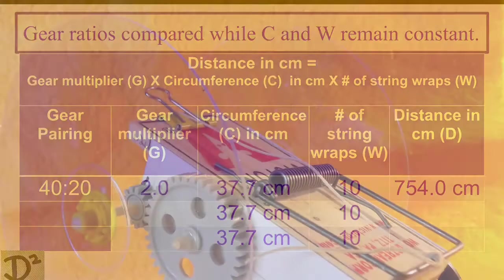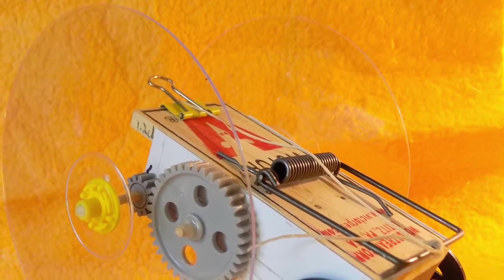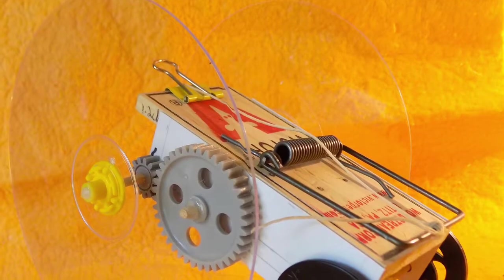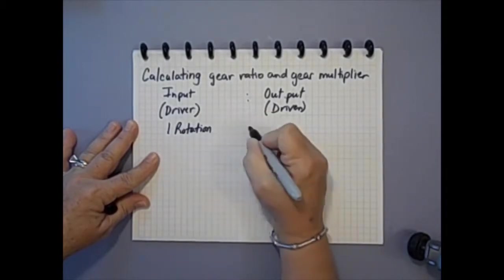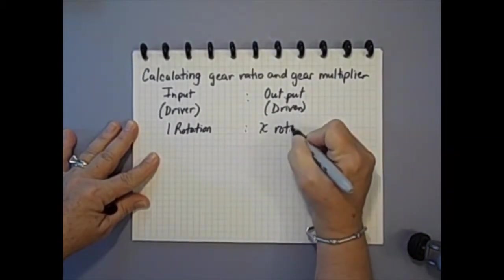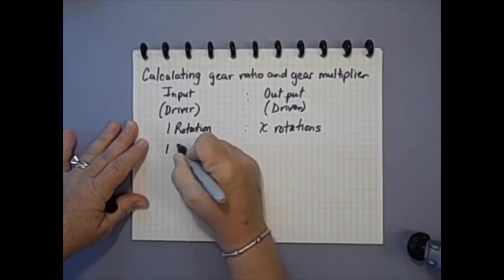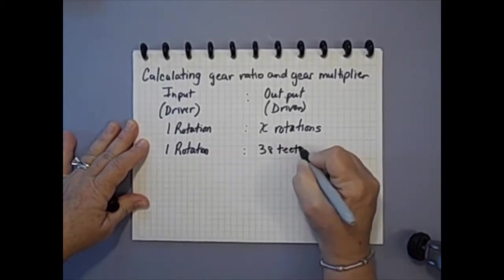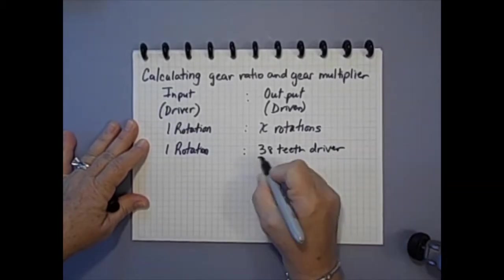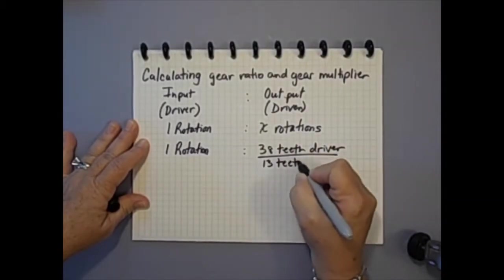So, how far will a car with CD wheels, 10 string wraps, and a gear pairing of 38 to 13 travel? Let's calculate the ratio and gear multiplier this gear pairing produces. The input gear, 38 teeth, will produce one rotation for each string wrap. Solve for X where the number of teeth on the driver gear is divided by the number of teeth on the driven gear.